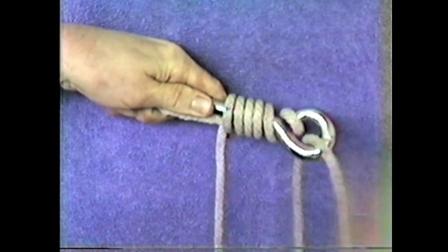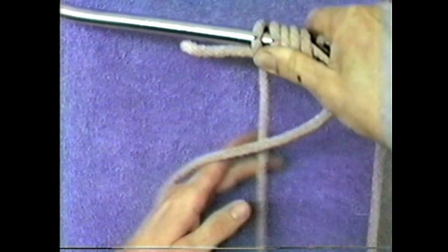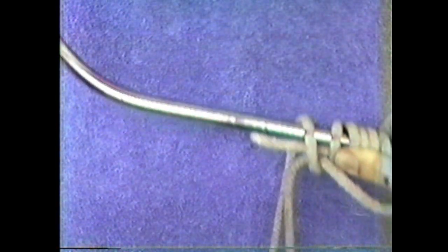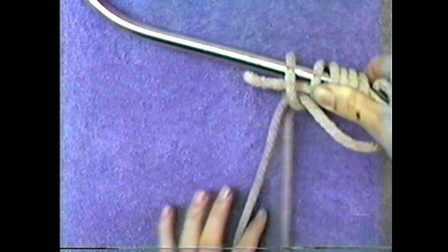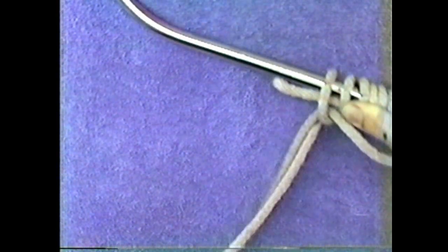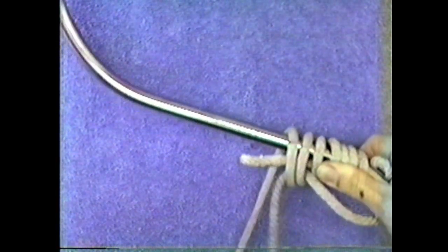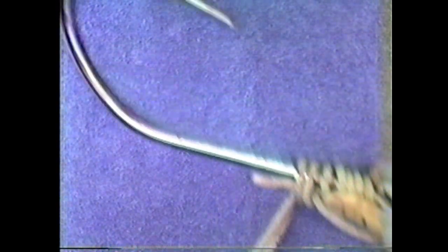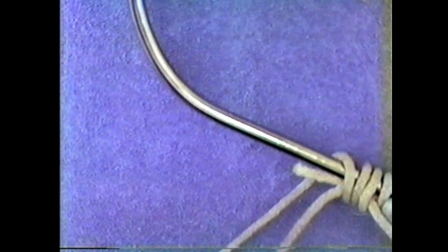And then simply what you want to do is you want to cross it over, grab the line that's from behind and go over the point of the hook, include that little pigtail, grab the line that's from behind, back over the front of the hook, and include that little pigtail, grab the line that's from behind, go over the front of the hook and include that little pigtail.